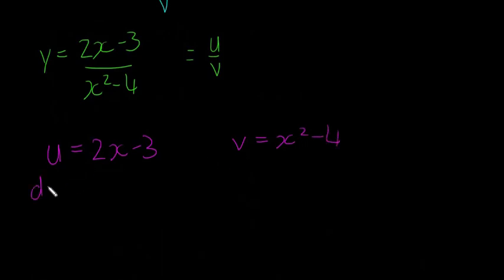So that means our du/dx is going to equal 2, so if you differentiate 2x, it'll go to 2, and if you differentiate minus 3, it'll go to 0, so it's just 2 is our answer. And now if we differentiate dv/dx, our x squared will go to 2x, and our minus 4 will go to 0.